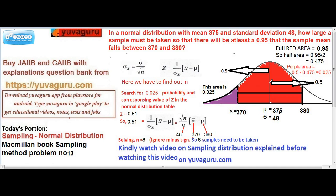Now this area is 0.475, this part of the area from this line to here 0.475. And as per the normal distribution curve, this full area means starting from this line to this end, it is 0.5.